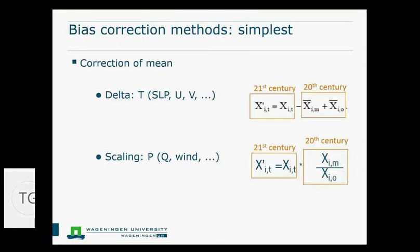The most simple one is what we call a delta or a scaling method. A delta method is what you can use, for example, for temperature if you only need to get a simple idea of how much warming there is. What you will do is use your 21st century signal. For example, the climate model says it's going to be 2-degree warming.